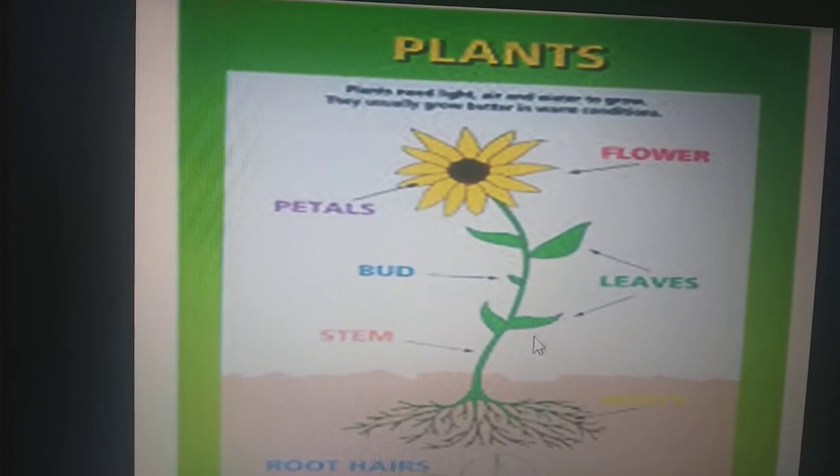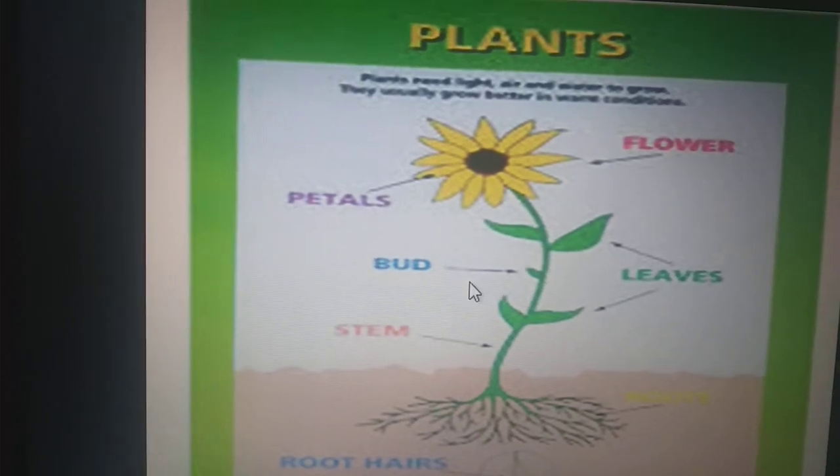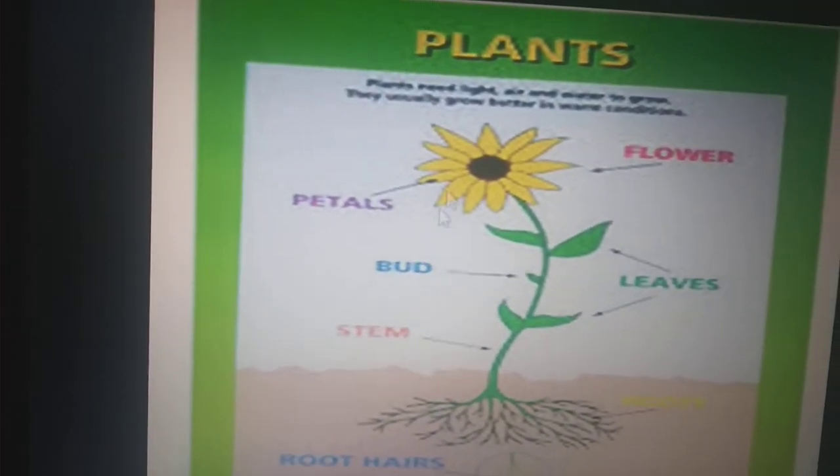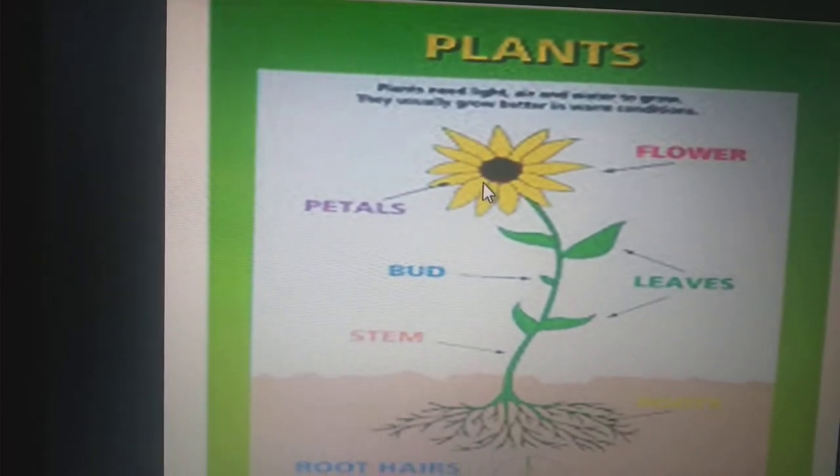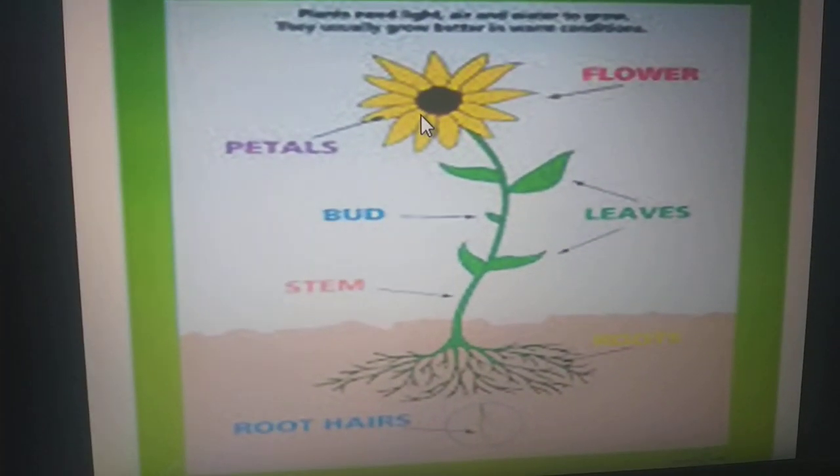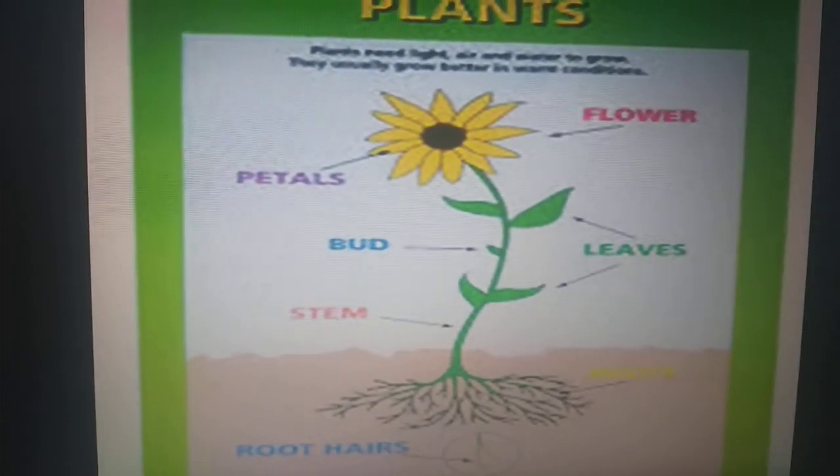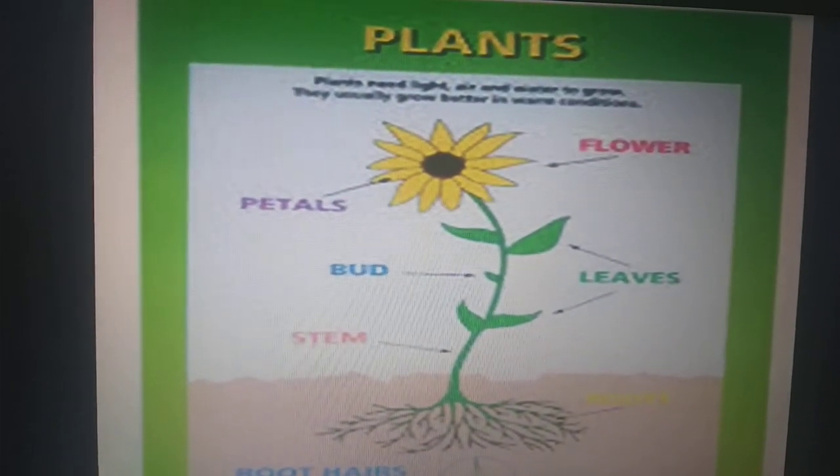Like on stem, look, leaves are also on the stem. Buds are also on the stem. Flowers are also on the stem. So stem carries all the parts of the plant. This is the stem. So stem is very important part.